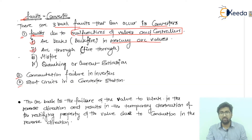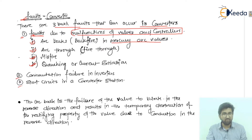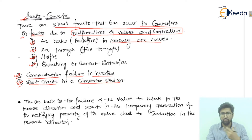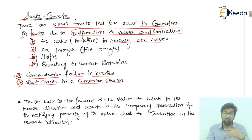The second point included is arc through and fire through, which we will discuss in further lectures, along with misfire, quenching, and current extension. The second of the three basic faults is commutation failure in the inverters — on the inverter side there is a commutation failure. Point number three is short circuits in converter stations. If a short circuit condition arises, a huge amount of current flows through the supply lines and equipment, causing disturbance and breaking connection between healthy and unhealthy sections.